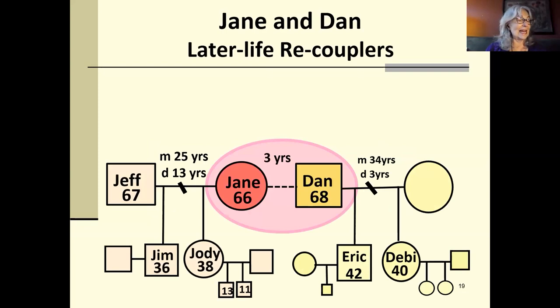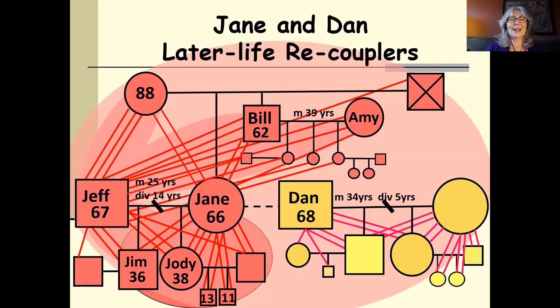We call this gray divorce, and it is usually or often followed by gray recoupling. The fantasy for these folks is the dog's dead, the kids are out of the house, and it's just us. But here's the reality. These step-families have decades of relationships that sometimes even intensify the challenges. So many of you may be the adult children. You may be Jim and Jodi. Many of you, I'm sure, have divorced and recoupled parents. And if any of you are this couple or you want to learn more about being the adult children of this couple, there is a chapter in my book, Surviving and Thriving, about later life step-families.